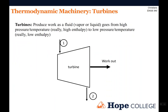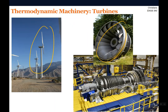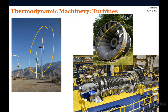A turbine is a system to produce work as a fluid — either a vapor or liquid — goes from high pressure to low pressure, really high enthalpy to low enthalpy. So we have fluid coming in this side at high pressure and high temperature, and then it's exiting out on this side at lower pressure and lower temperature. It's spinning the turbine around, which turns a shaft, which turns a gearbox, which turns an electric generator — that's how we're generating electricity from this system.